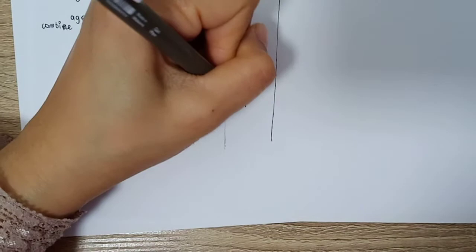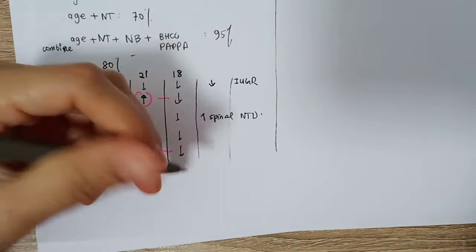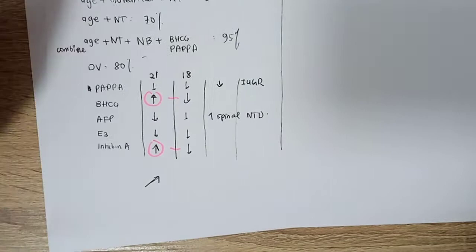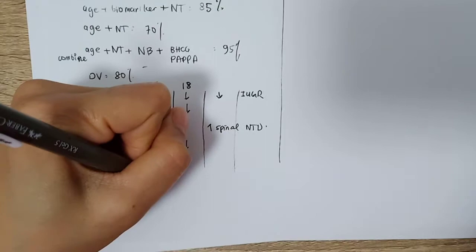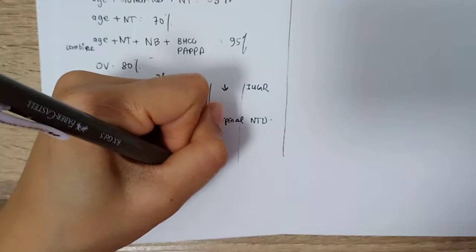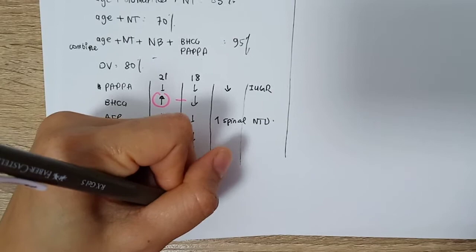This can be done at 13 weeks plus 6 days. If the patient has positive results, you can send for diagnostic tests, which currently available CVS can be done as early as 13 weeks. And also we have amniocentesis at 15 weeks. If you've diagnosed this at 13 weeks, you can straightaway do CVS, which carries the same miscarriage risk of 1%.